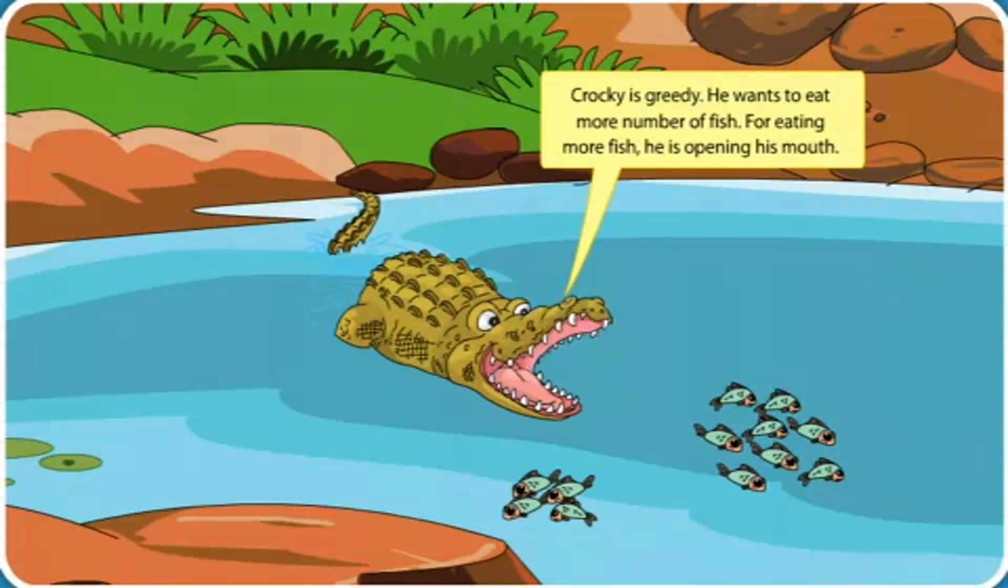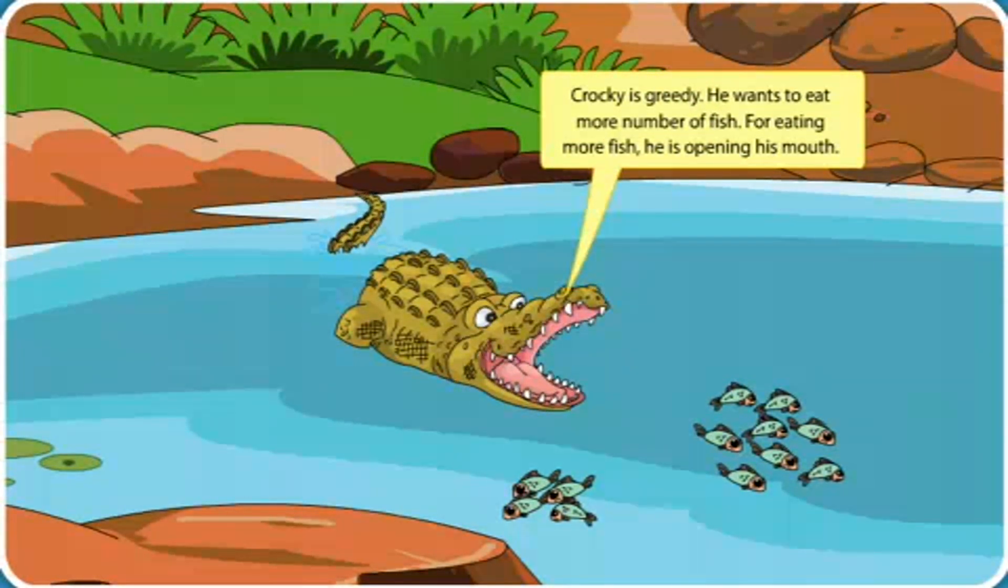Crocky is greedy. He wants to eat more number of fish. For eating more fish, he is opening his mouth.